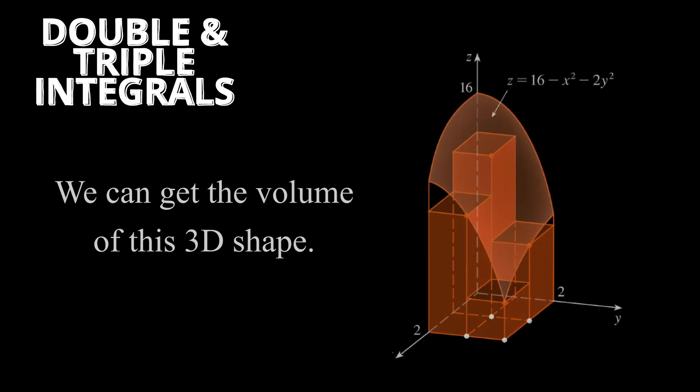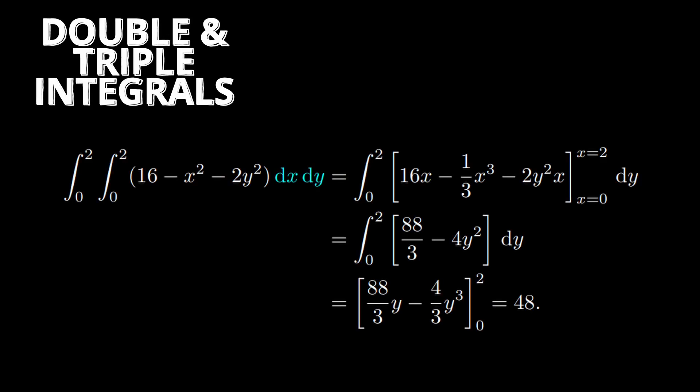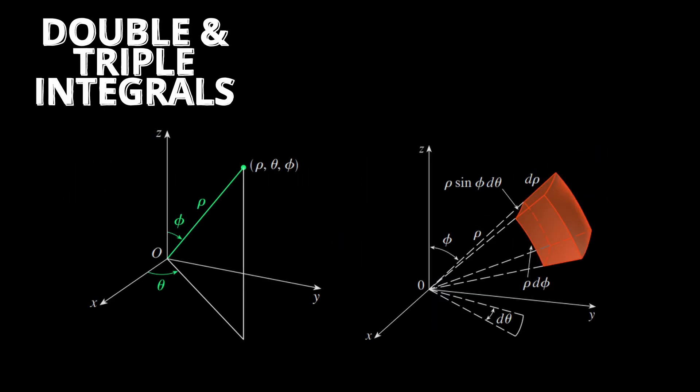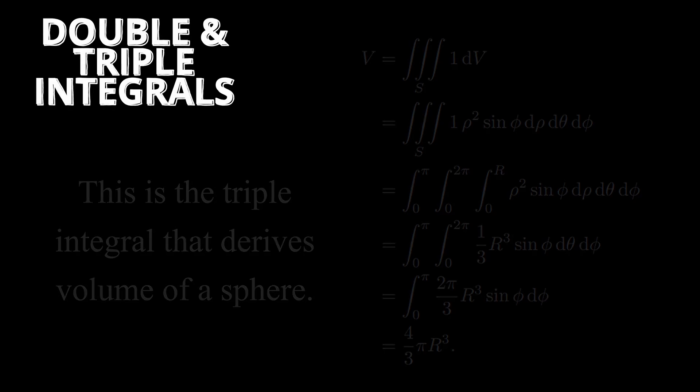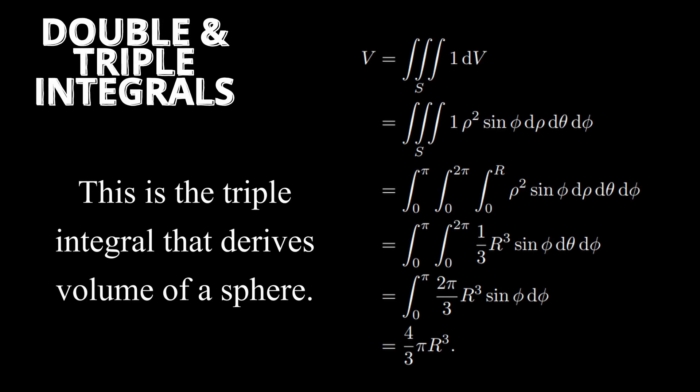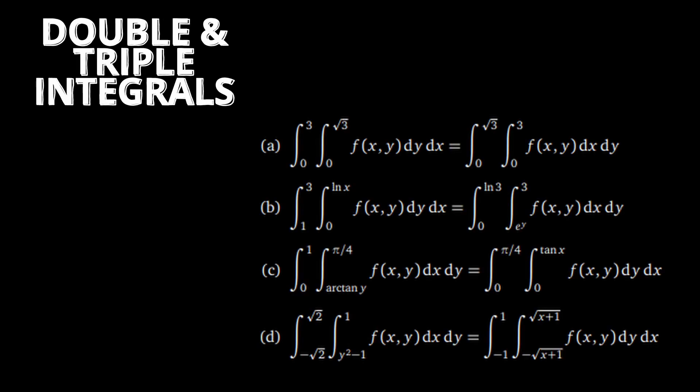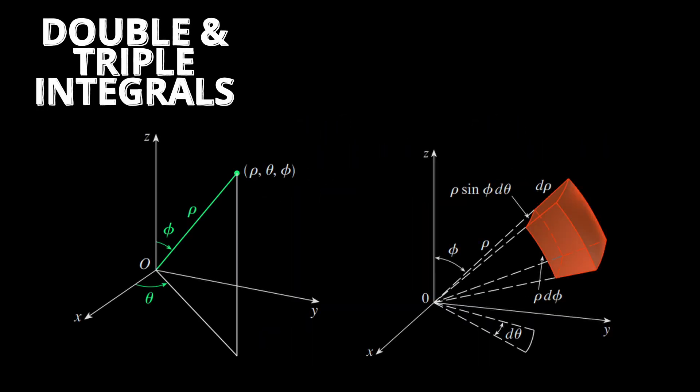Double and triple integrals. Double integrals are what we use to obtain volumes under a surface. It is evaluated by first taking the inner definite integral, then the outer definite integral. Similarly, the triple integral helps us integrate over a three-dimensional region, and is evaluated almost the same way as a double integral. It's worth noting that the order of integration is interchangeable, and you would still obtain the same value. These tools are powerful and significant, as they have many applications.